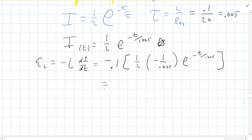Well, it's 1 half times negative 1 over 0.005 E to the negative T over 0.005. And so we have two negatives, so they cancel out. This 1 over 0.005 is 200. Half of that is 100. 0.1 times that is 10. So we get 10 E to the negative T over 0.005. So that's one way to do that.